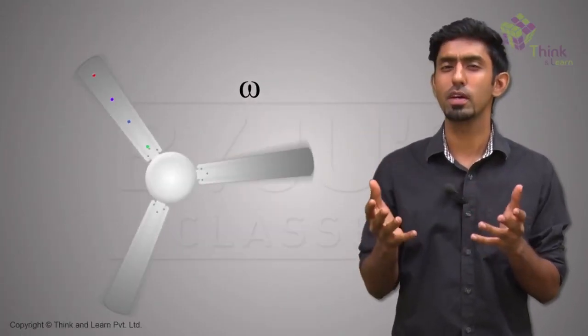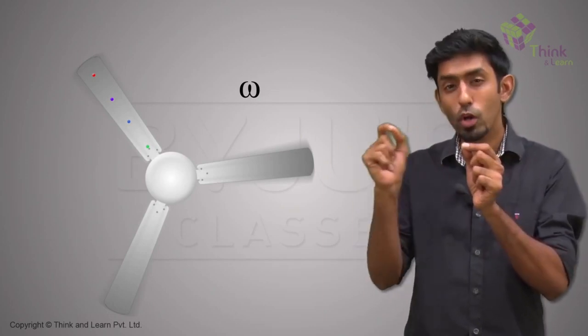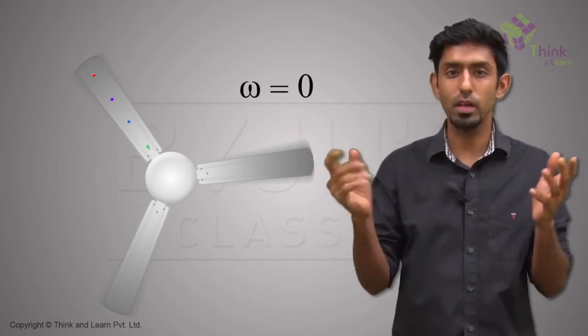If you look up at your fan, when it's switched off, what is that common omega for all the points? Zero. None of them are covering anything.